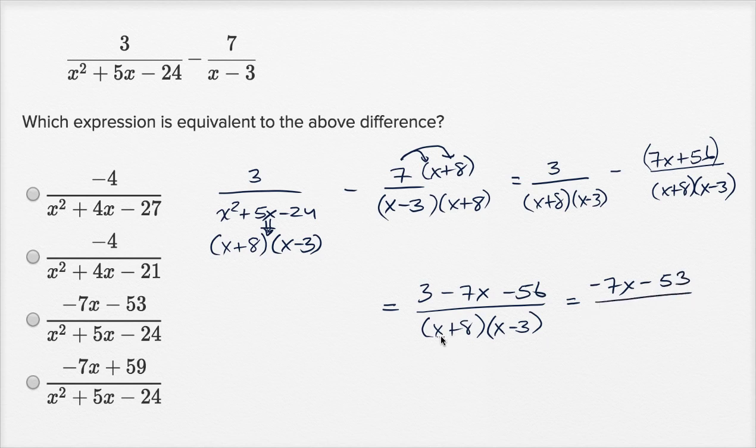and then three minus 56 is minus 53, or negative 53, and x plus eight times x minus three, we already established is the same thing as x squared plus five x minus 24. And that is exactly this choice right over there.